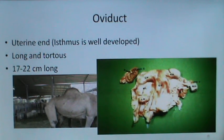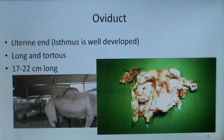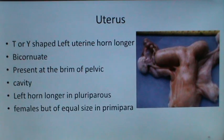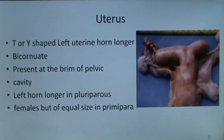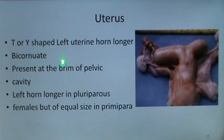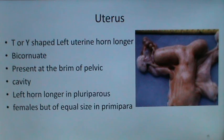The uterine end of the oviduct — the isthmus — is well developed, long and tortuous, 17 to 22 cm in length. The uterus is D- or Y-shaped; the left uterine horn is longer. The uterine horns are bicornuate, present at the brim of the pelvic cavity. The left horn is longer in pluriparous females, but both uterine horns are similar in size in primiparous females.